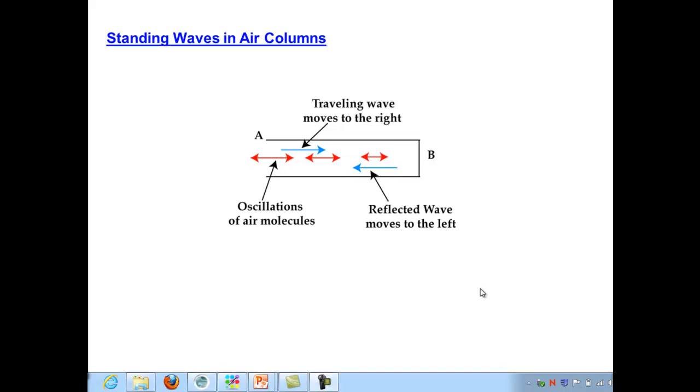This is Physics 142 online again, and I would like to finish up our discussion of standing waves by switching from standing waves on a string to standing waves in air columns. A lot of what we're going to talk about will apply directly to simple notions of musical instruments, the woodwind instruments. The most important thing to understand is how the traveling wave happens and then what the boundary conditions are at the ends of the tube or the pipe that contains the air.